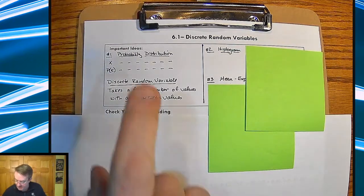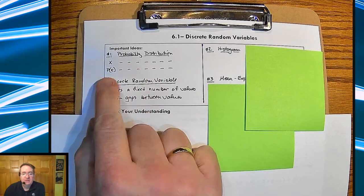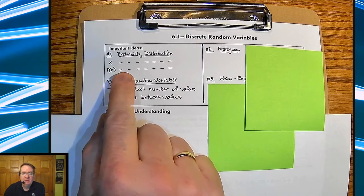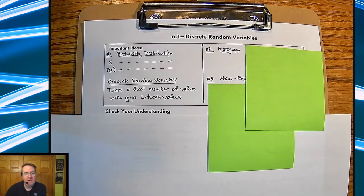All right, so probability distributions. What you're going to end up doing is typically they are made in tables of two rows. You have your variable values across the top, and then you have the probabilities of each of those variables down below it, much like what we had on the previous page.